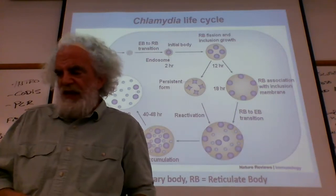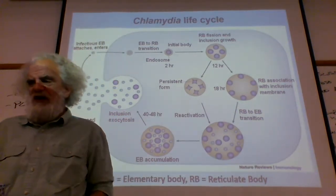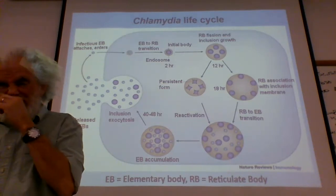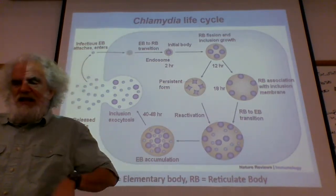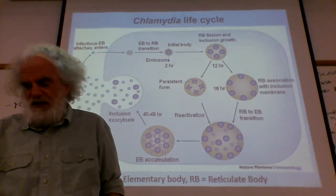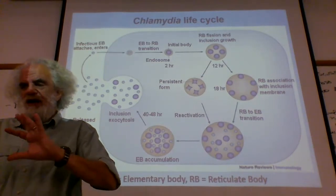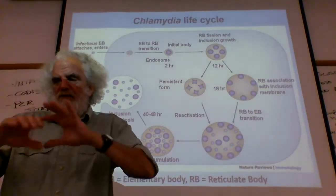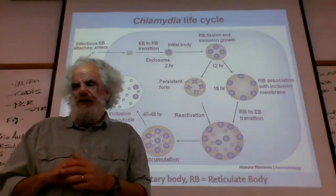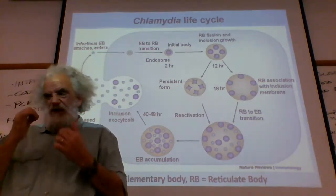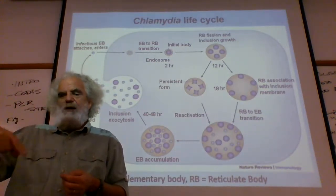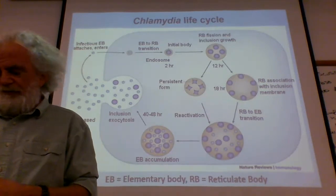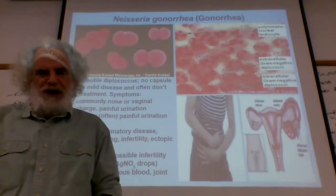The chlamydia life cycle is interesting in that there are persistent forms held inside cells. There are two different forms: the elementary body and the reticulate body, named for how they look. The elementary body is the infectious part that's released. The reticulate body is what's essentially stored. The elementary body builds a large membrane around it, forming a large vesicle, and these are able to grow inside another vesicle within the cell — remember, this is an intracellular bacterium.